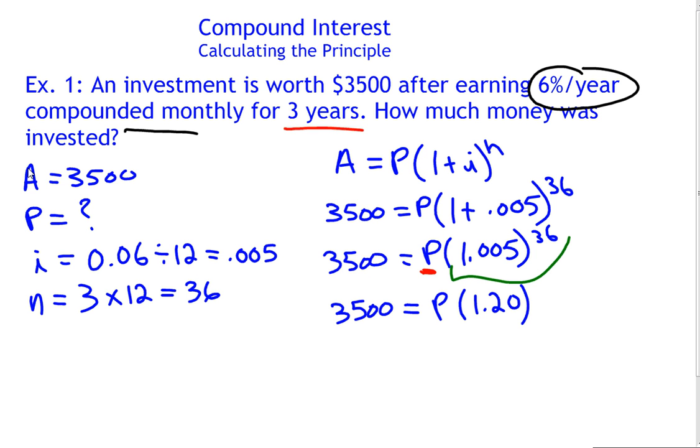And we want to solve for P, find out what P is. P is being multiplied by 1.20. We undo that multiplication by dividing, doing the inverse operation. And whatever we do on the right, we better do on the left as well.